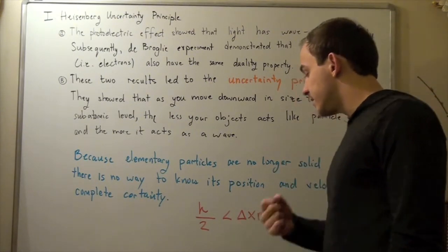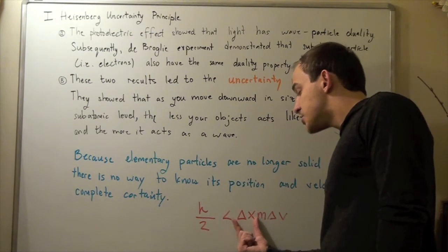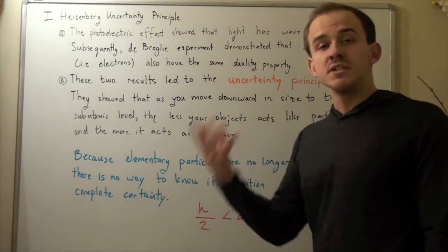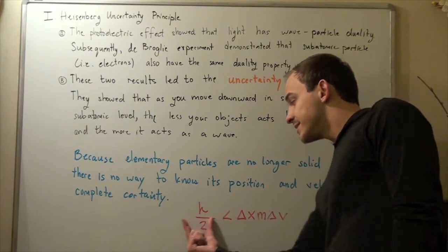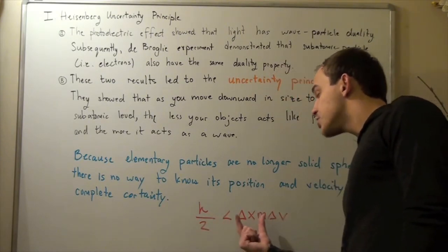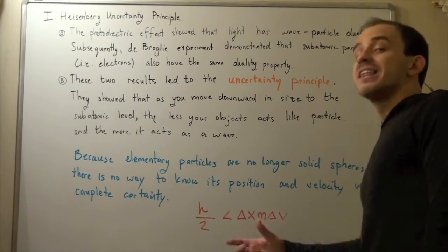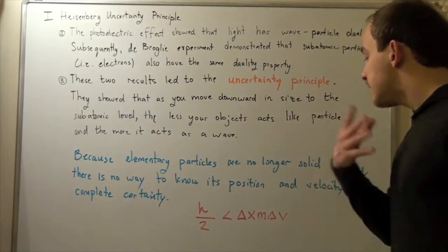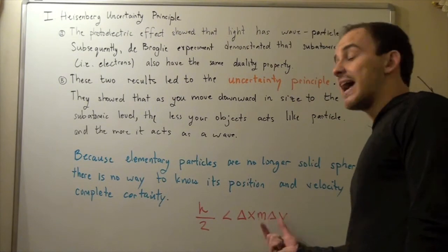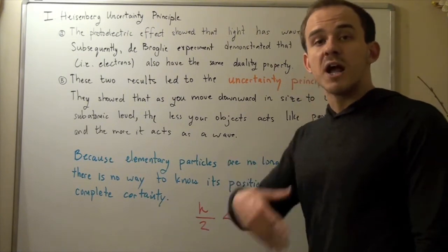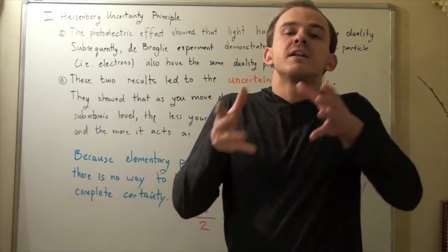What this equation basically says is the following: the less our change in x is — if this value is very small — that means we know more information about our position, where our electron is located. And that means if this decreases, since Planck's constant is a constant, the change in velocity must increase. The smaller our change in x, the more we know about our position, the greater our change in v, the less we know about our velocity. And likewise, the more we know about our velocity, the less we know about our position. We can't be very certain about our position and at the same time about our velocity.